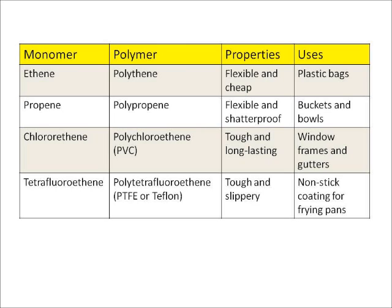Polythene is flexible and cheap, so it's used for plastic bags. Polypropene is flexible and it won't shatter, so it's used for making buckets and bowls. Polychloroethene is tough and long lasting, so it's used to make window frames and gutters on buildings. And lastly, polytetrafluoroethene is tough and very slippery, so it's used as a coating for non-stick frying pans.